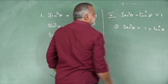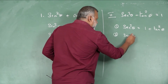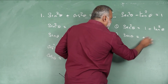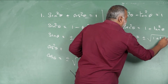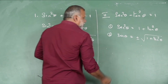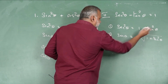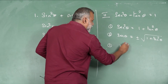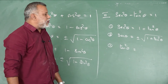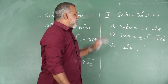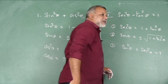We can write 1 + tan²θ = sec²θ. So sec θ = ±√(1 + tan²θ). Now the third sub-result: if I want to find out the value of tan²θ, I convert to the other side: tan²θ = sec²θ − 1.